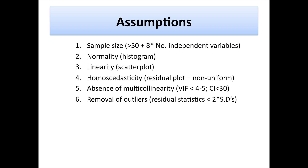We should also test for normality, and we can do that via a histogram. We should also check for linearity of our independent variables against our dependent variable. If we don't have linearity — if we have some other relationship — multiple linear regression isn't appropriate, and we can use a scatter plot to look for that.